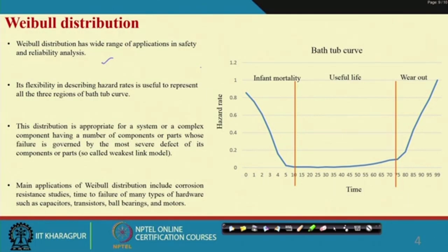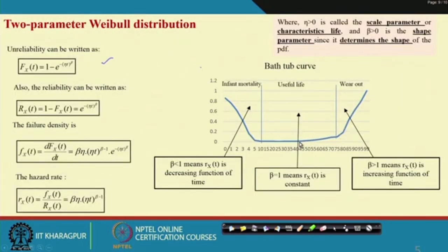If you see the application of Weibull distribution, you will find it is extensively used in reliability and safety studies, and many failure analyses like corrosion resistance studies, electronics equipment such as hardware and transistors, and mechanical equipment like ball bearings and motors. The variable of interest can be time to failure.